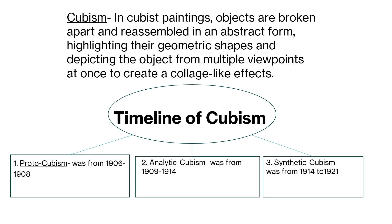Cubism — in cubist paintings, objects are broken apart and reassembled in an abstract form, highlighting their geometric shapes and depicting the object from multiple viewpoints at once to create a collage-like effect.